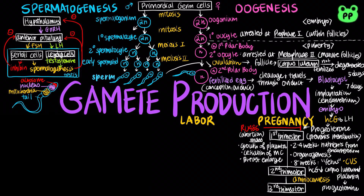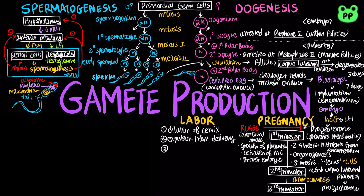Labor refers to the process by which childbirth occurs. It involves three main steps: the dilation of the cervix, the delivery of the infant through expulsion, and finally the delivery of the placenta. Birth or parturition is brought about by a series of strong rhythmic uterine contractions, and it is regulated by several hormones.